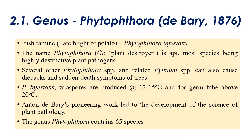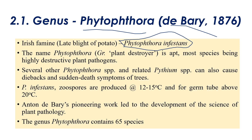The first genus is Phytophthora. The genus Phytophthora was created by Anton de Bary in 1876 with the discovery of the late blight of potato. This was the exact reason for the initiation of a separate branch of science called plant pathology. Phytophthora caused the Irish famine in 1845 — this is Phytophthora infestans, also called late blight of potato. The name Phytophthora means 'plant destroyer' — a Greek terminology.